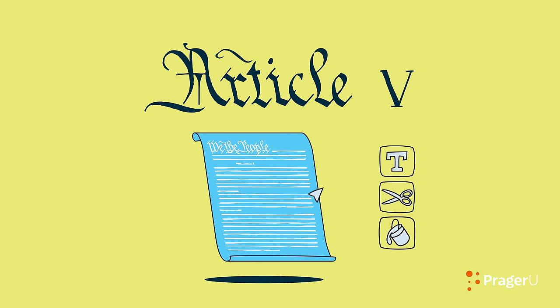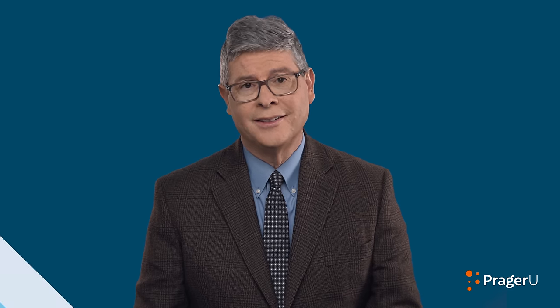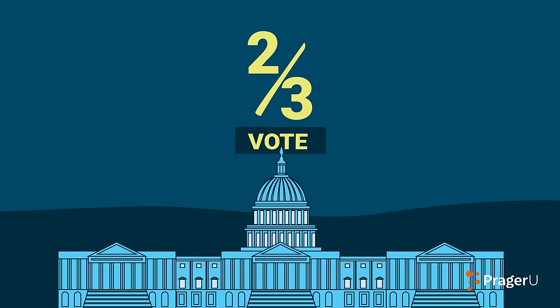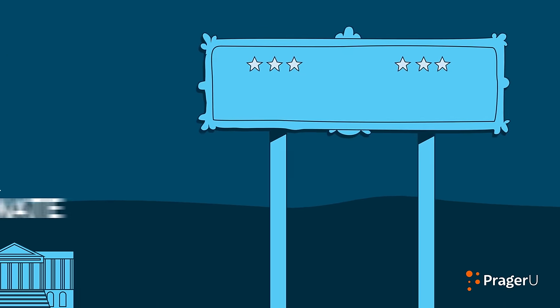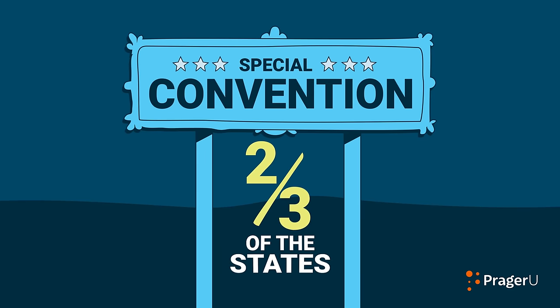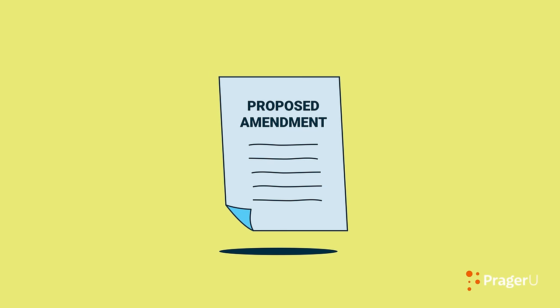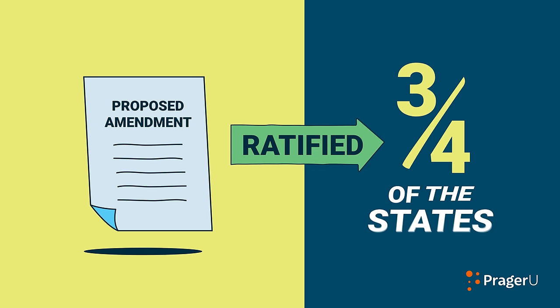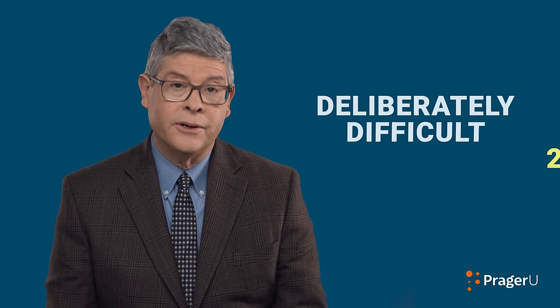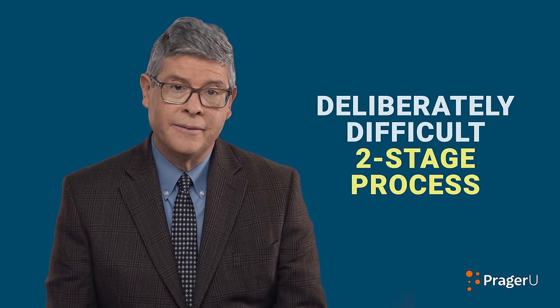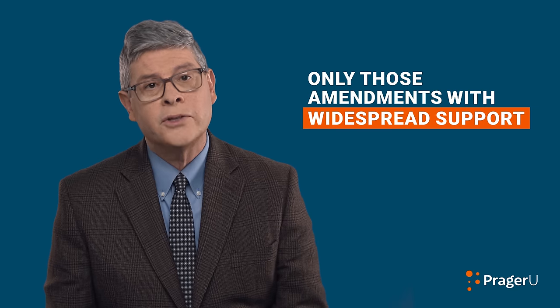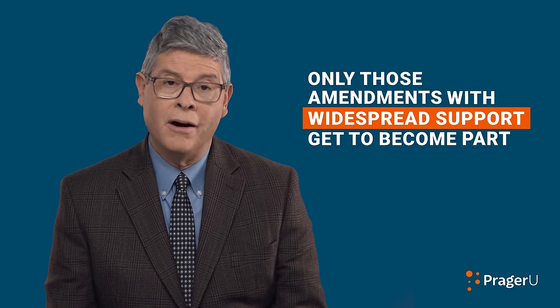Article 5 explains how the Constitution can be amended. Changing a federal law is simple — it just takes a majority vote in Congress. Changing the Constitution, however, is much more difficult. It takes a two-thirds majority vote in both the House and the Senate, or a special convention called for by two-thirds of the states. The proposed amendment must then be ratified by three-quarters of the states. This deliberately difficult two-stage process ensures that only those amendments with widespread support get to become part of the Constitution.